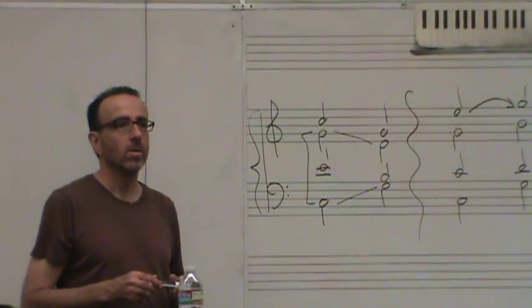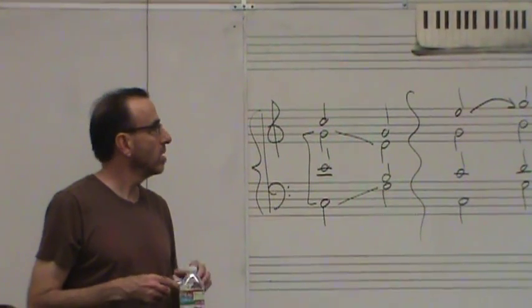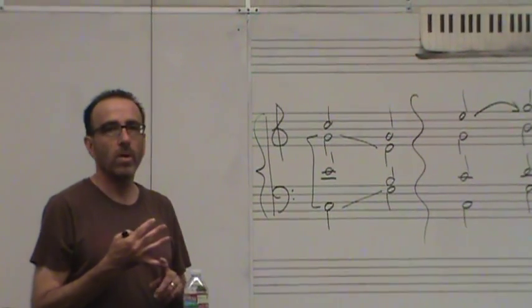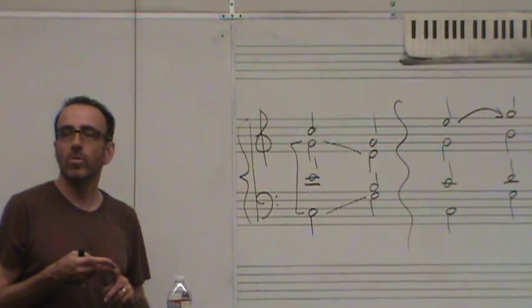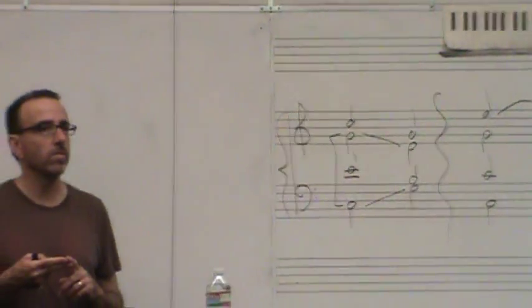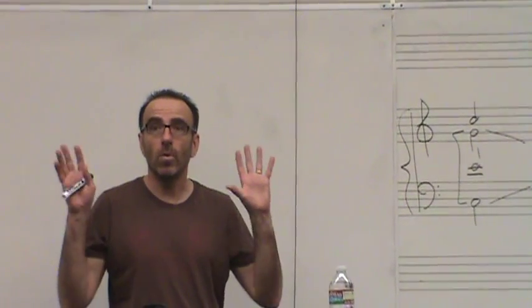So we'll just say it's in the outer voices. Okay? So those are the two main types of this. So parallel fifths, parallel octaves, direct fifths, or they sometimes call it hidden. Those are the motions to avoid.